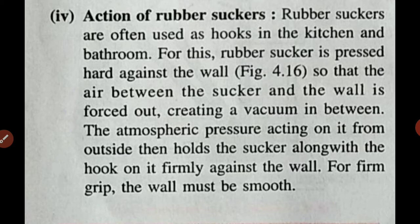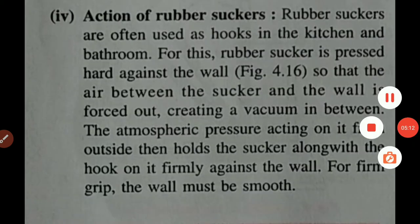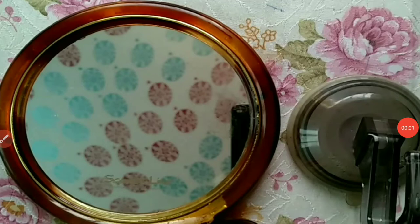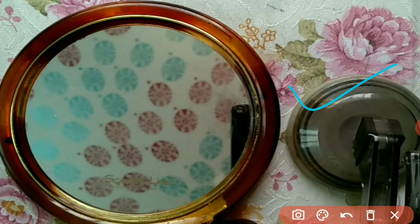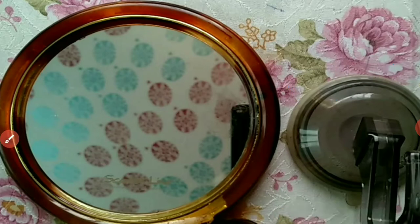A clip is shown to explain this. A rubber sucker and a plane mirror are used — the plane mirror is chosen because its surface is smooth, allowing the sucker to stick easily. The same effect can be achieved on the surface of tiles.